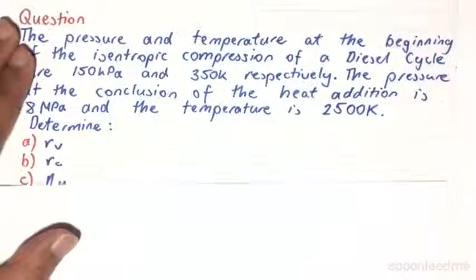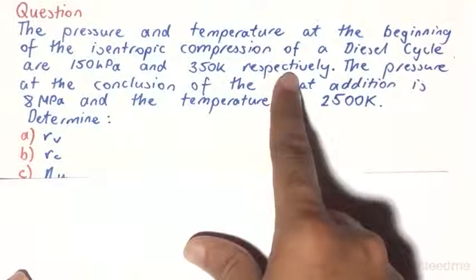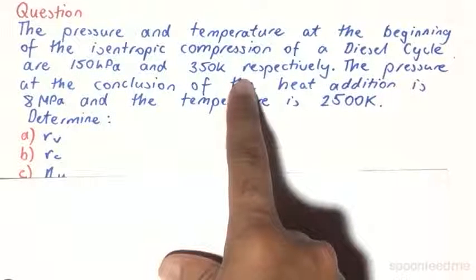So our question tells us that the pressure and temperature at the beginning of the isentropic compression of a diesel cycle are 150 kilopascals and 350 Kelvin respectively.